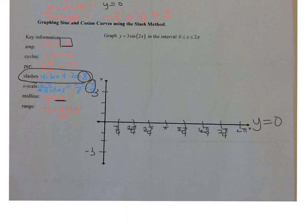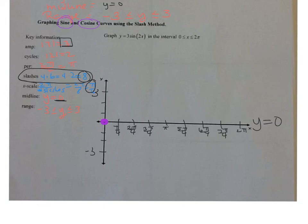Now we're going to start graphing. You are going to start by putting the point on the y-axis where you always start. Sine always starts at the midline, and cosine starts at its max or min. So sine starts at the midline right here — put your first point right on the midline at 0. Each one of these slashes is going to have a point, either at its max, on the x-axis, or down at its min.